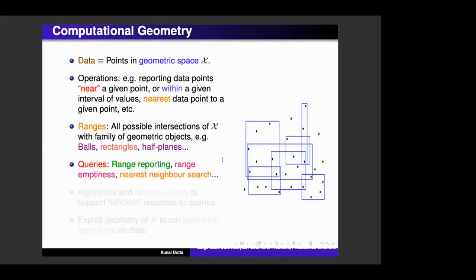And your queries become problems like range reporting, where you want to report all the points which lie in a given range or a range emptiness, where you want to say if a range is empty or not, a nearest neighbor search and so on. And we want to come up with algorithms and data structure, which support some notion of efficient responses to these queries. And what happens is that the geometry of once you have this problem in a geometric setting, it becomes often much simpler than the combinatorial version of the problem.